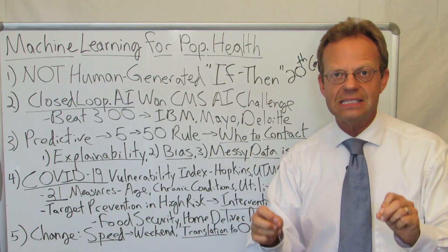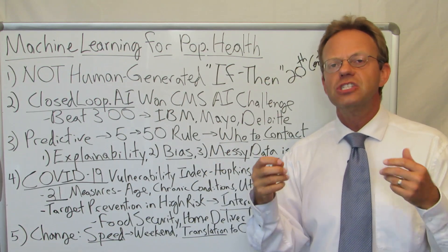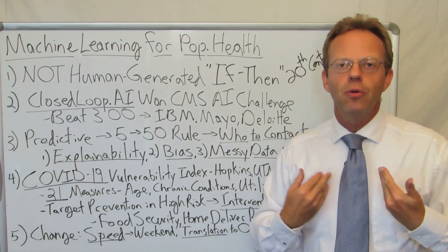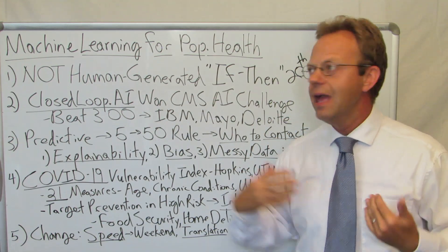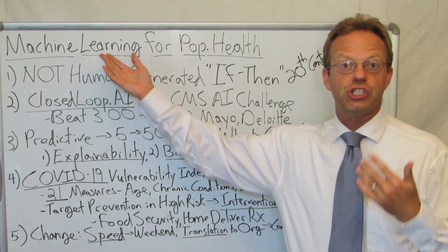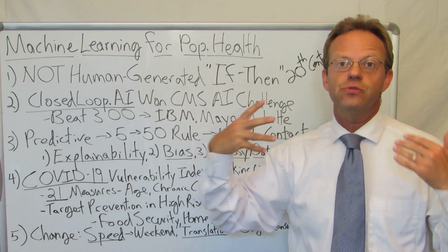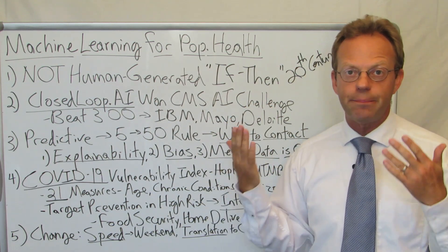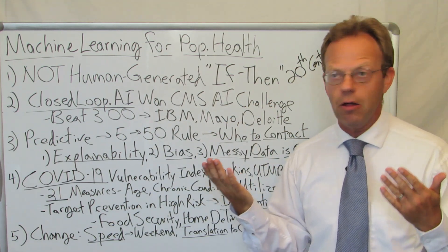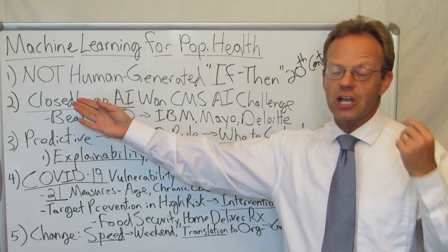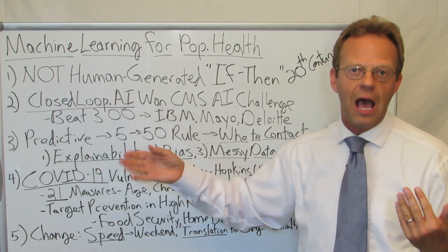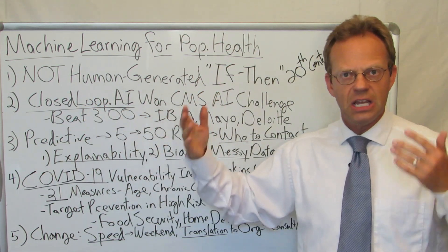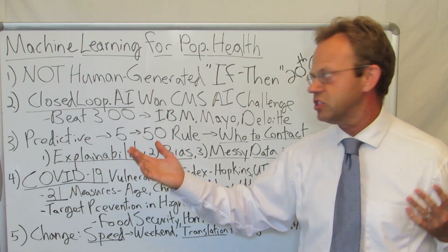So when I think about quote-unquote real AI, I think about machine learning. Let's apply machine learning to population health. There's a company that does this called Closed Loop AI, based in Austin, Texas. It's somewhat of a startup.